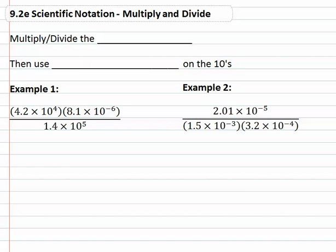In this video, we're going to take a look at how we can multiply and divide scientific notation together. As we do this, just like multiplying or dividing in separate problems, we will multiply and divide the numbers and then we will use our exponent properties on the tens.